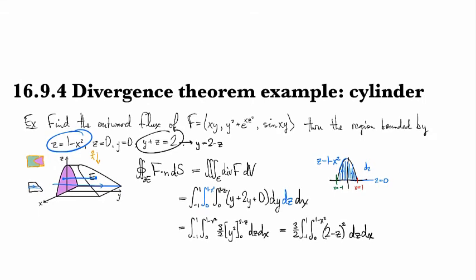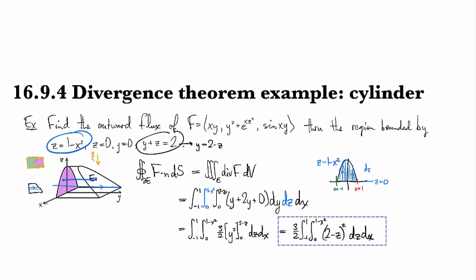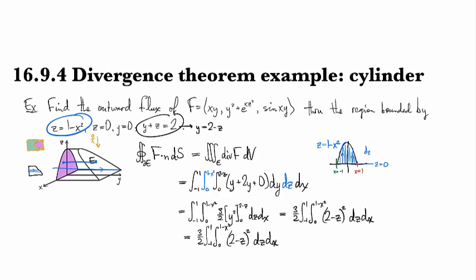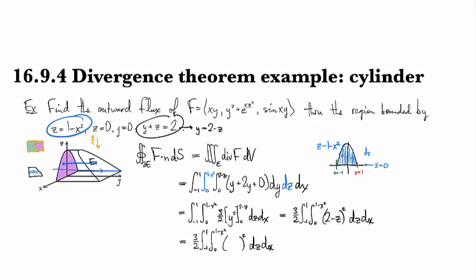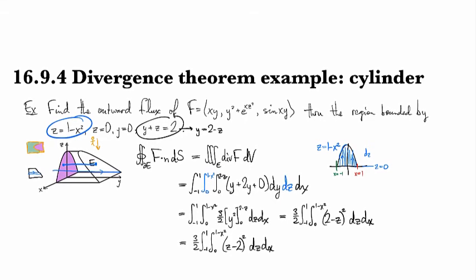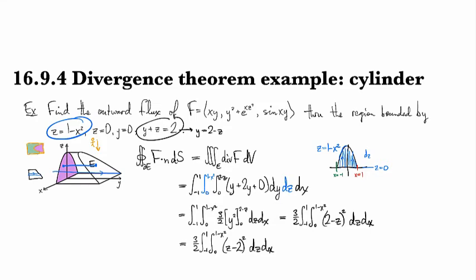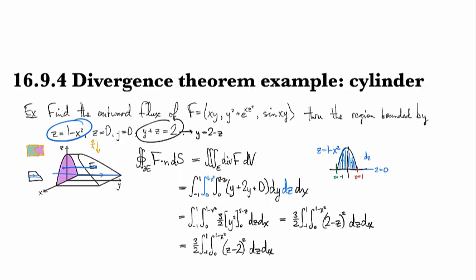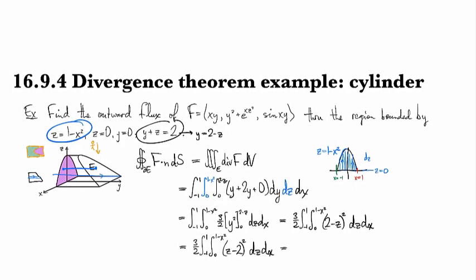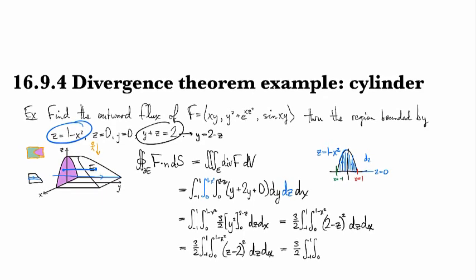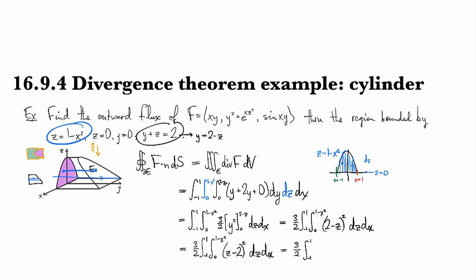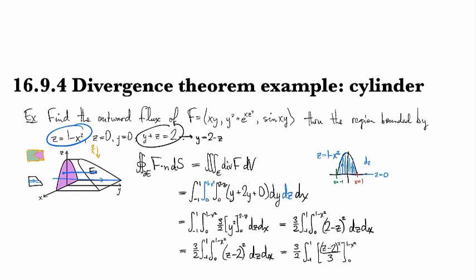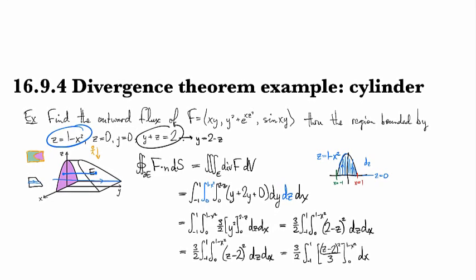We can use a symmetry trick here. Since this is squared, z minus 2 squared is the same as 2 minus z squared — that helps when doing the integration because I don't have to worry about a negative sign from the u-substitution. So integrating gives (z minus 2) cubed over 3, evaluated from 0 to 1 minus x squared, and then we can cancel the 3s.